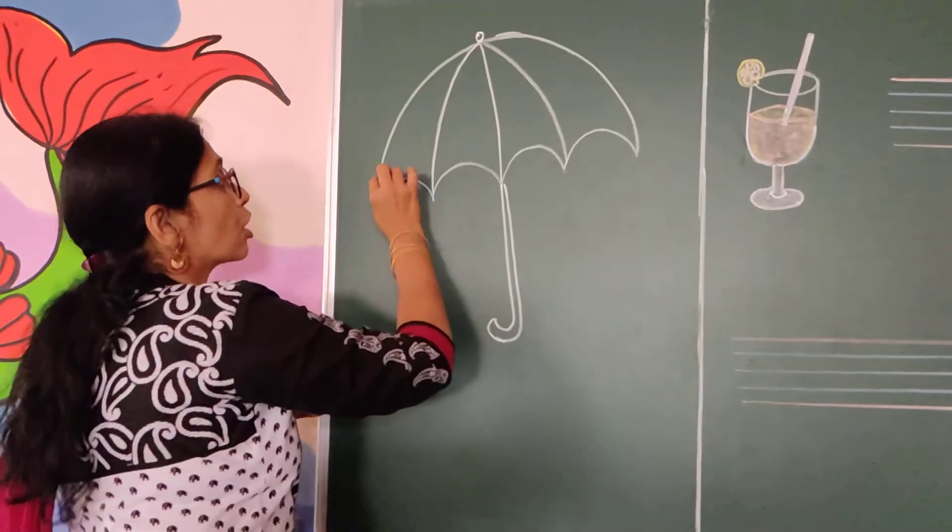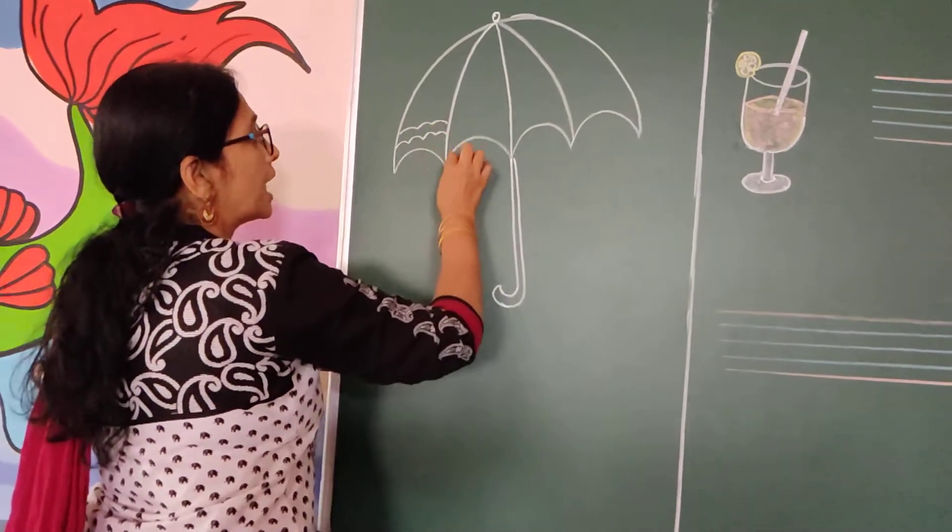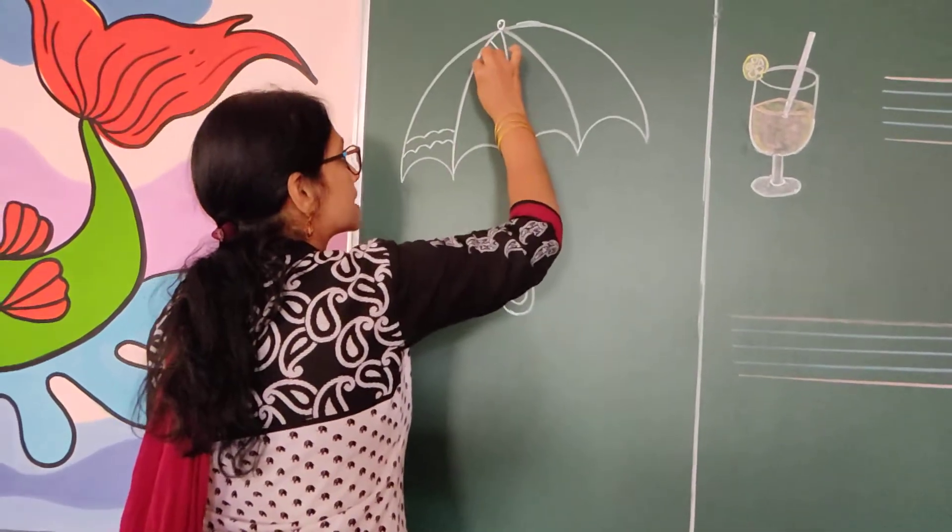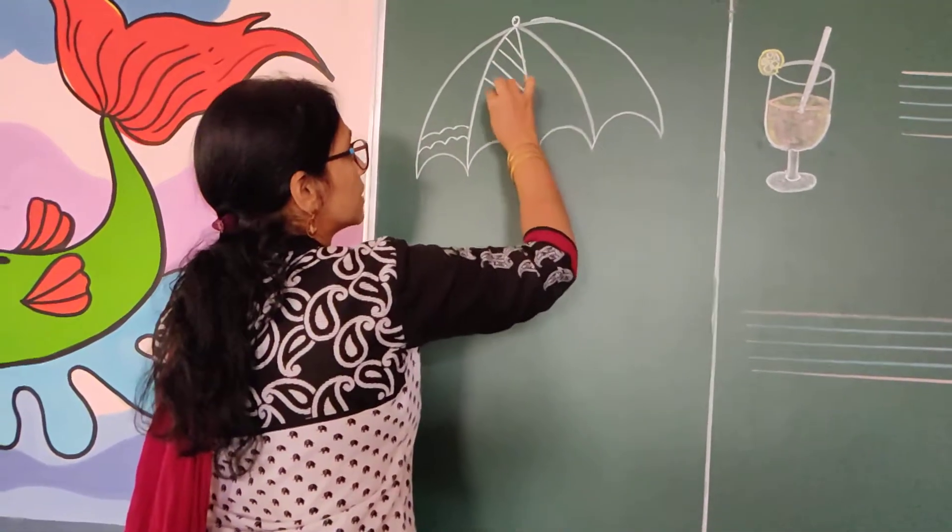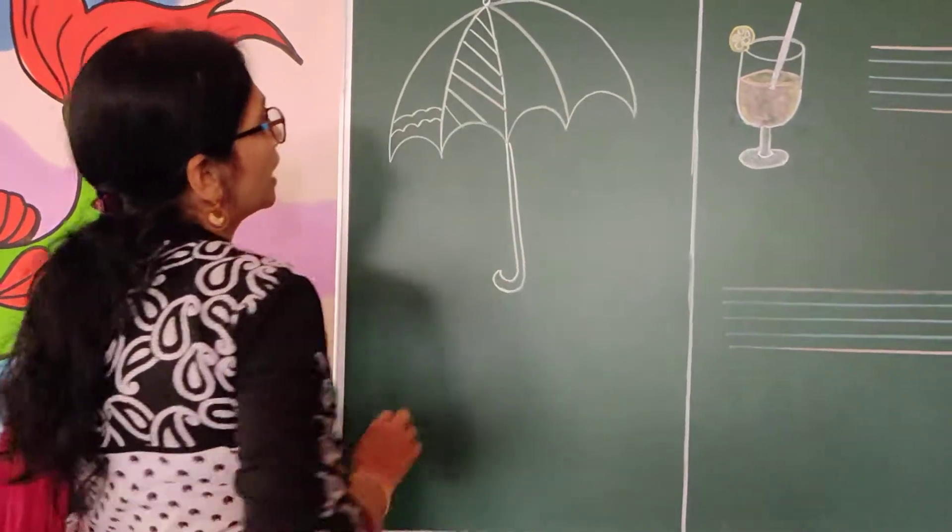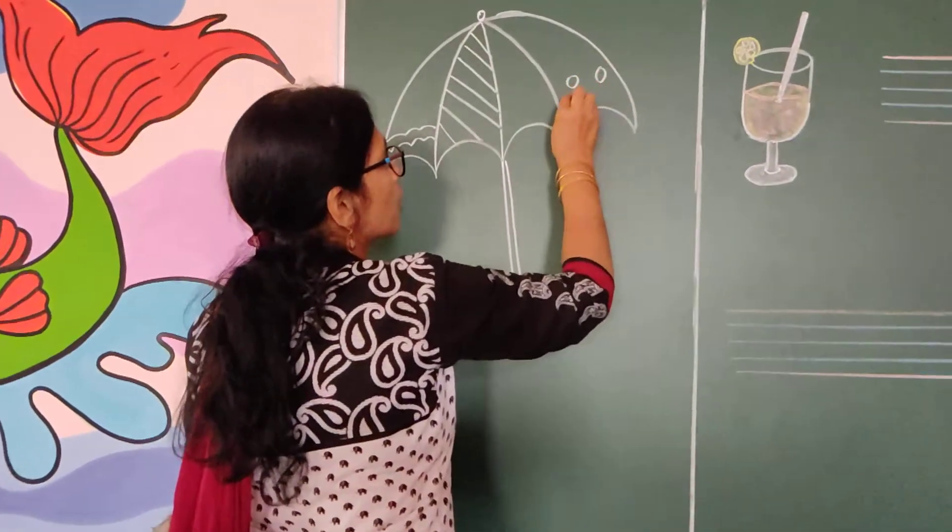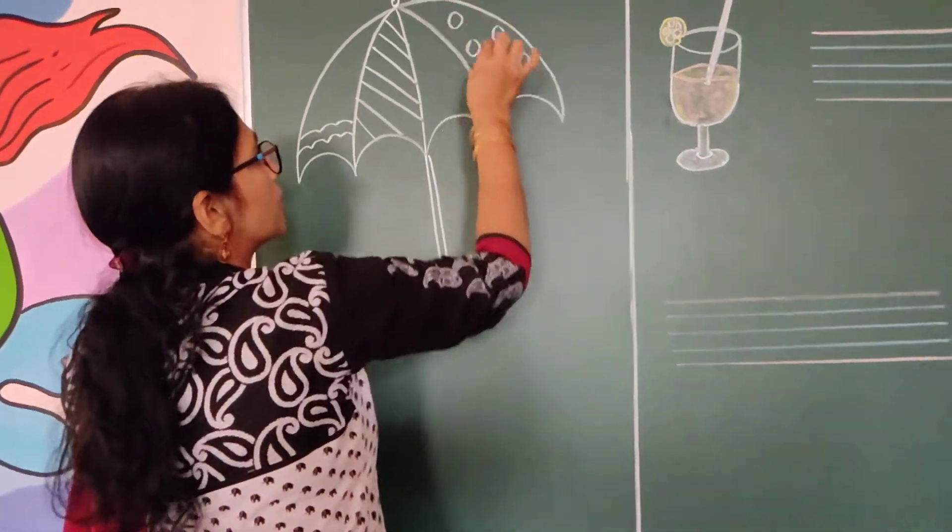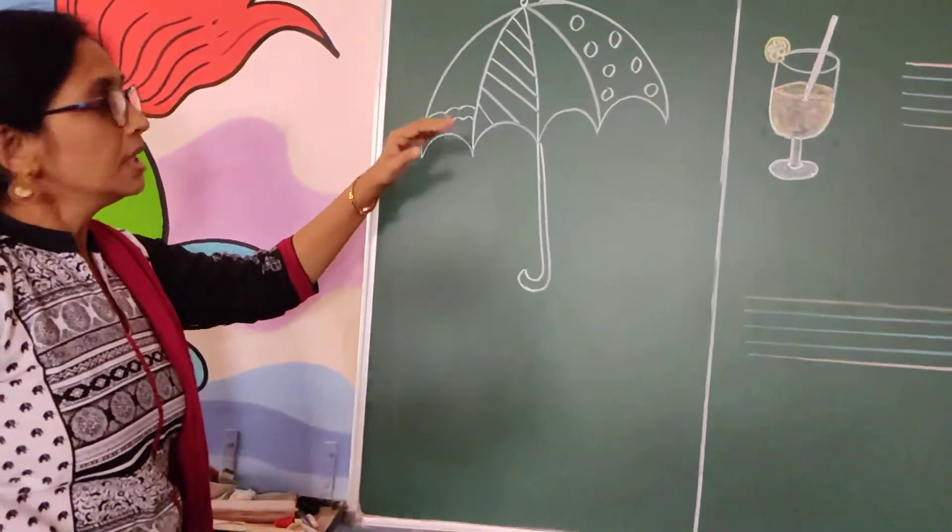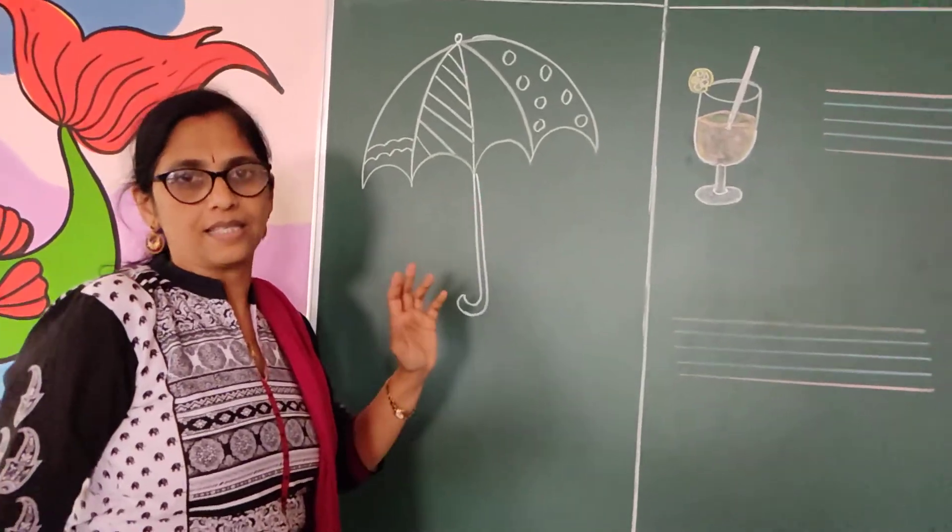In this you can draw like curve, like curve small, small curve also you can do. Otherwise lines, slant lines, like this also you can do. Like this, like this different patterns if you want you can draw the two or three umbrellas.